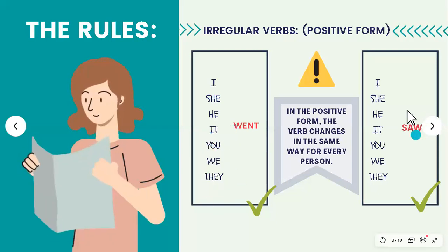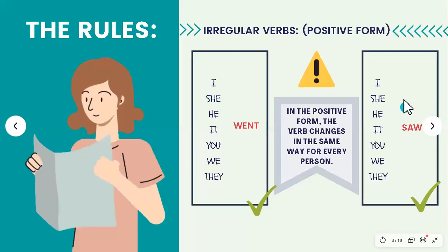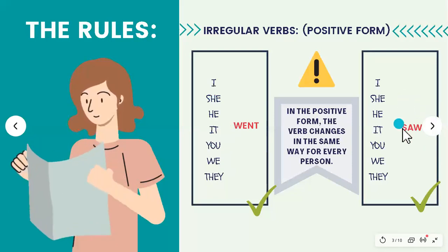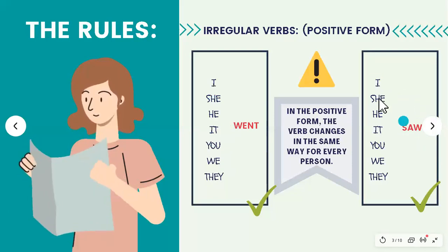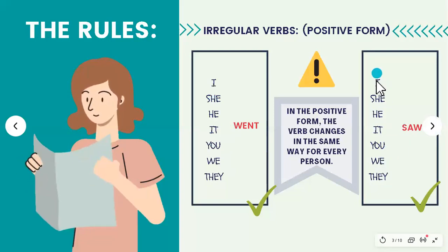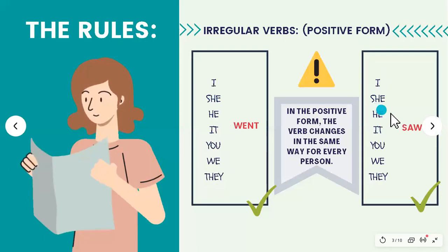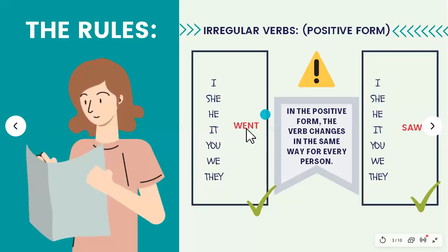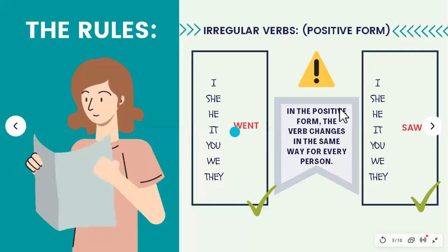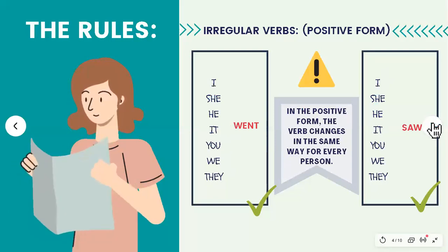Lo mismo aquí, por ejemplo, tenemos el verbo 'see', y en el pasado cambió a 'saw'. I saw, she saw, he saw, we saw, they saw. So, all of the grammatical persons go with the same verb — todos van con el mismo verbo. Por eso decíamos, solo debo fijarme si el verbo es regular o irregular.